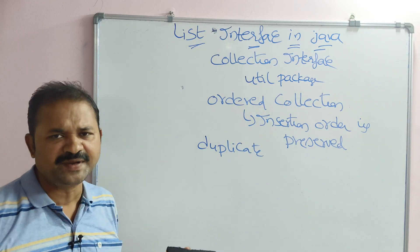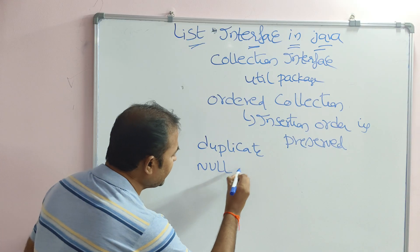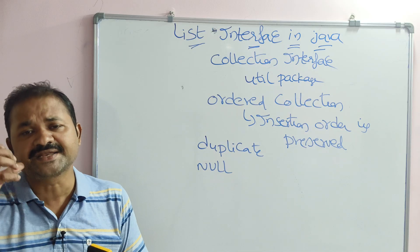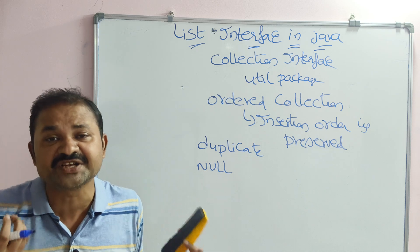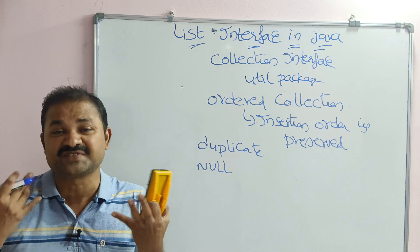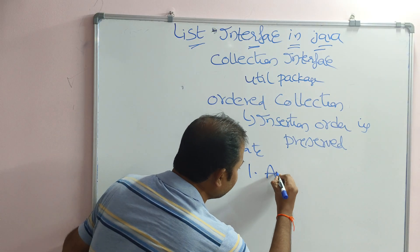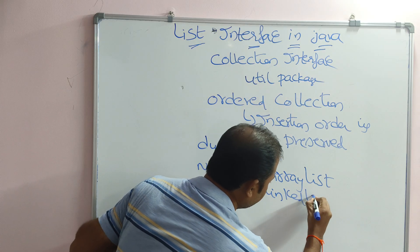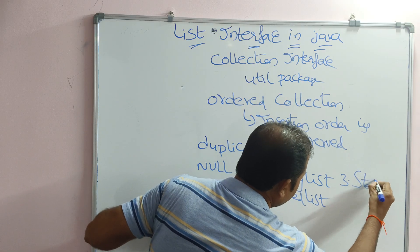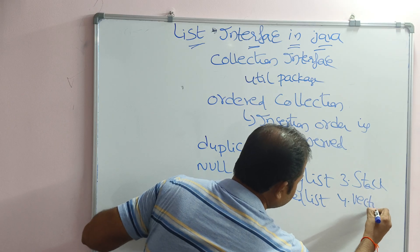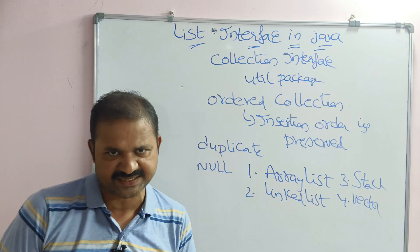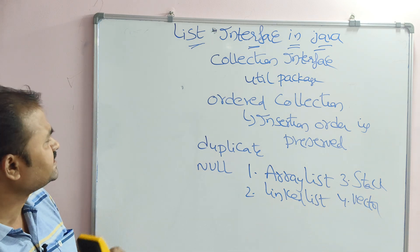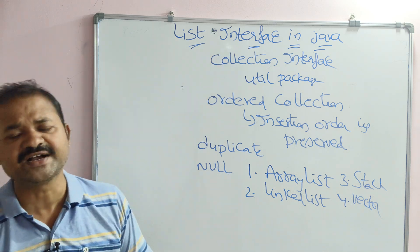Since insertion order is preserved, it is called an ordered collection. List also allows duplicate elements, and null insertion is possible. To use the full functionality of the List interface we have several implementing classes: the first is ArrayList, the second is LinkedList, then Stack, and the fourth is Vector.